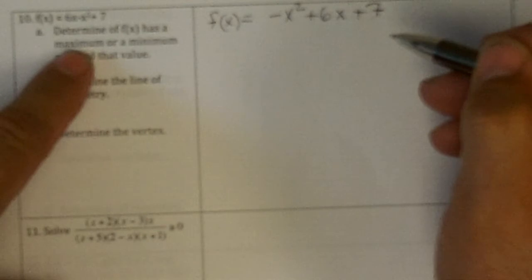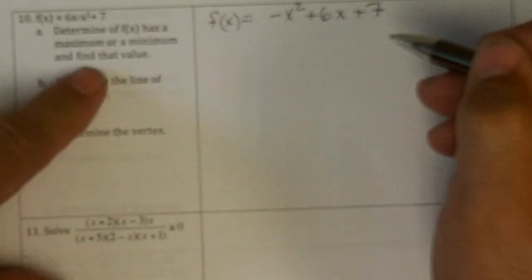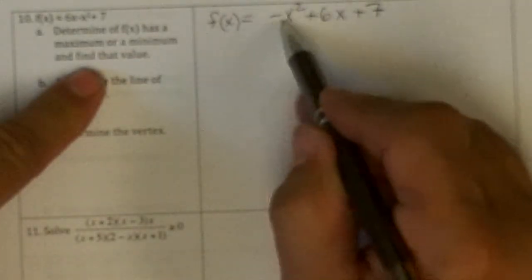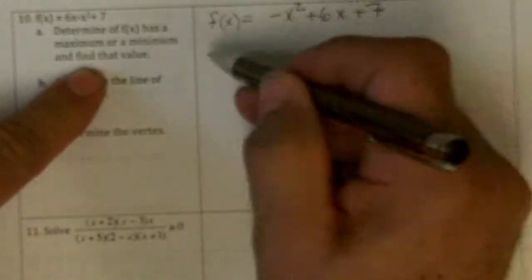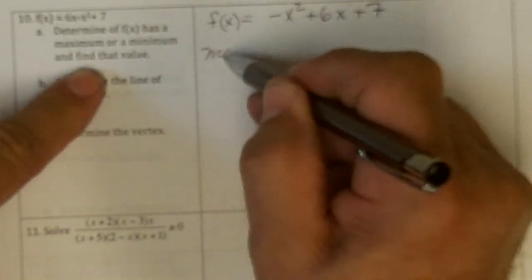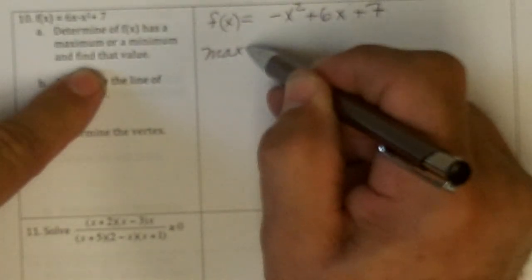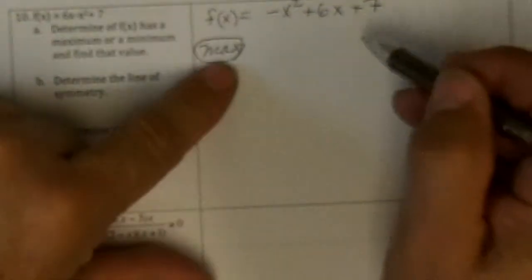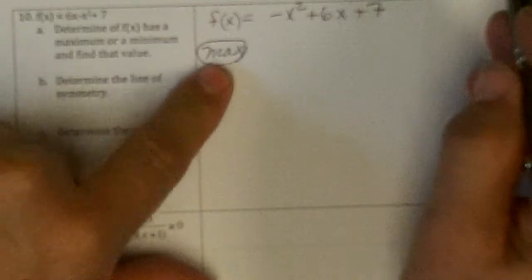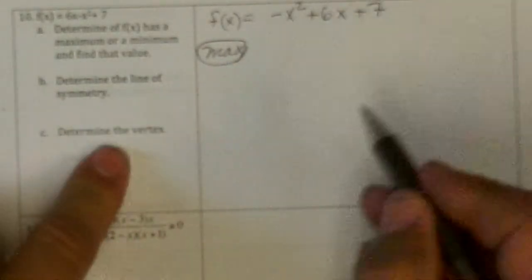It says find, determine whether it has the maximum or minimum. Since it's an upside down parabola, it's going to have a maximum. And then it says find that value. Well, it's going to be at the vertex, which I have to do down here.